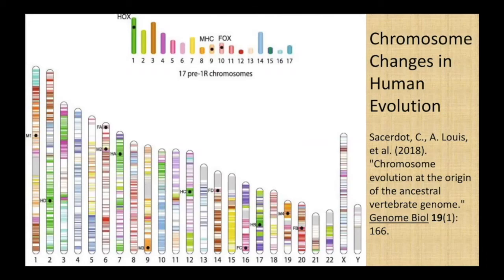In our evolution, there were many chromosome fusions that reduced chromosome numbers from 68 to 23, and multiple interchromosomal exchanges that produced the color mixtures you see in our chromosomes. In addition, there has been the acquisition of numerous new DNA sequences, many of them repetitive mobile genetic elements, which are the white and gray segments in our chromosomes.